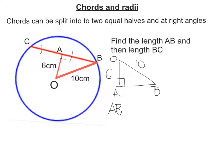So AB squared is going to be 10 squared minus 6 squared. So AB squared is going to be 100, take away 36. So AB squared is going to be 64.